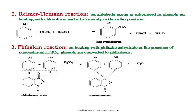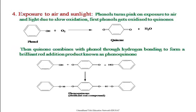Next is the phthalein reaction. In the phthalein reaction, phenol is treated with phthalic anhydride in the presence of concentrated sulfuric acid, and the phenols are converted to phthaleins. Two phenol molecules react with phthalic anhydride, the para-hydrogen of each phenol reacts with the oxygen of phthalic anhydride, and concentrated sulfuric acid removes water from these compounds to give an addition product known as phenolphthalein — an important indicator in acid-base titrations.